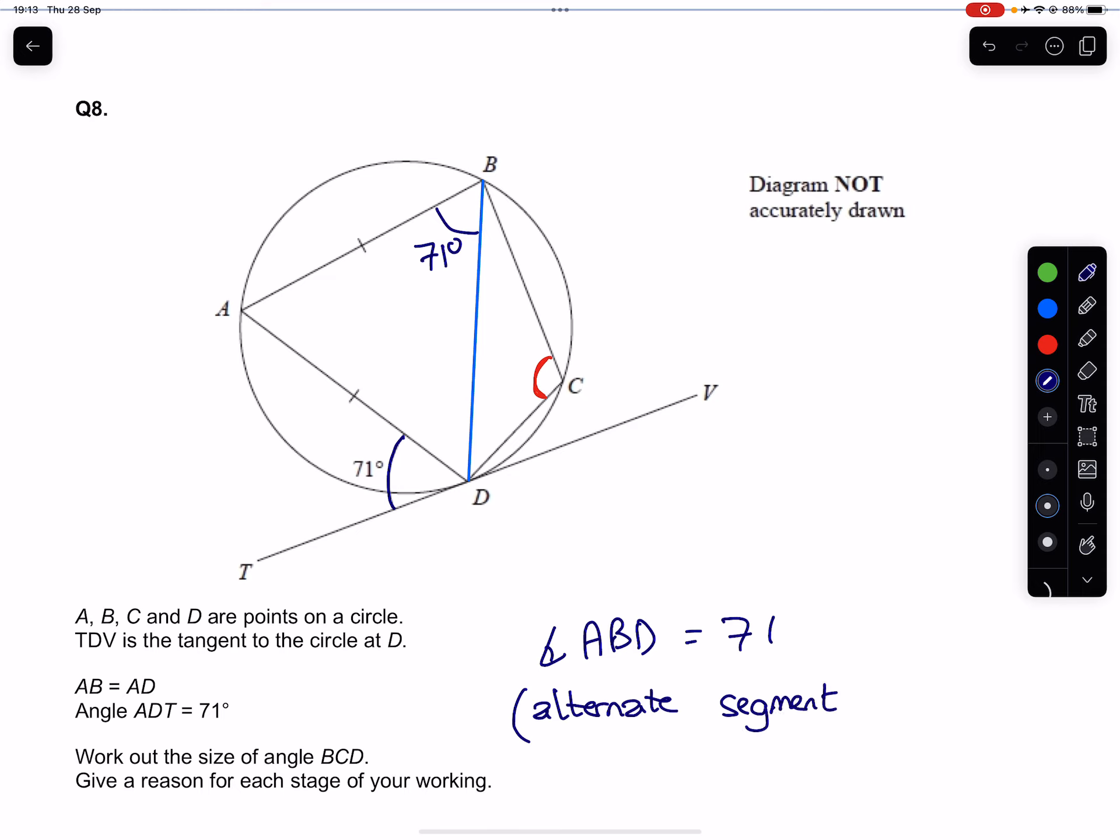By drawing that line in blue, we've now created also an isosceles triangle—these two lines here indicating that those lengths are the same.